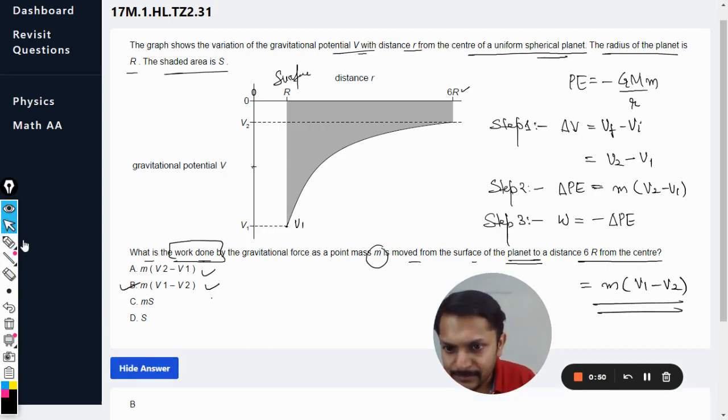And yes, my dear students, as you can see the answer given is B in the mark scheme. It means that the steps that I have told you, they are absolutely correct. There is no problem about it, there is no doubt about it.